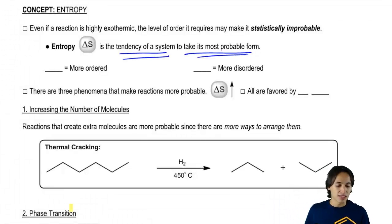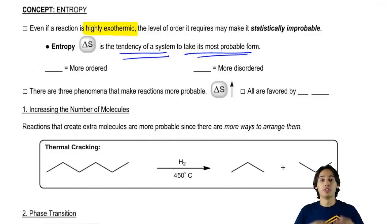So what that means is that even if a reaction is highly exothermic - like if you talk about bond association energies and enthalpy - the level of order that it requires might make it statistically improbable.